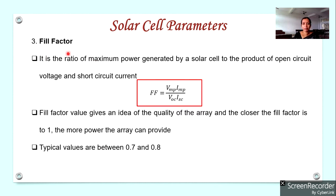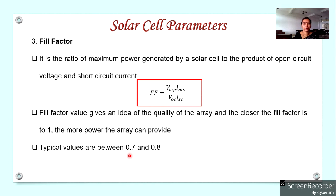The next important parameter is the fill factor. Fill factor is defined as the ratio of the maximum power obtainable from a solar cell (VMP × IMP) to the product of open circuit voltage and short circuit current (VOC × ISC). The fill factor determines the quality of the solar cell, with typical values in the range of 0.7 to 0.8. Its maximum value is 1.